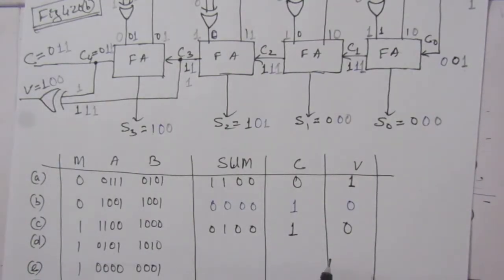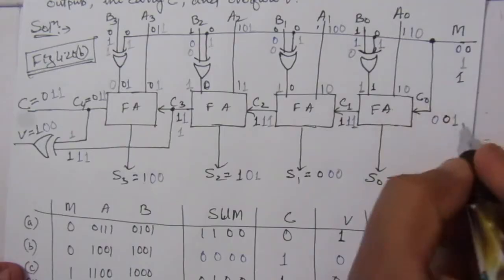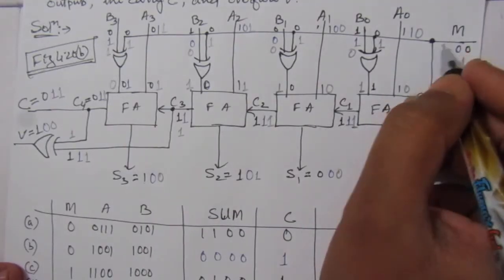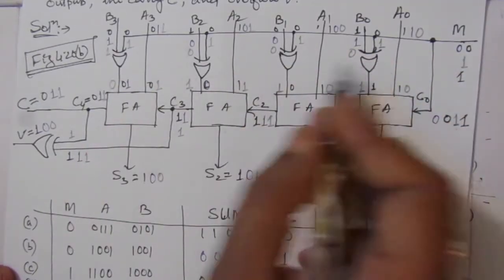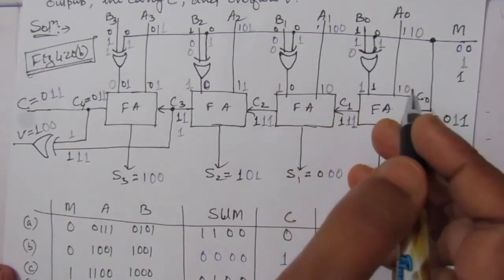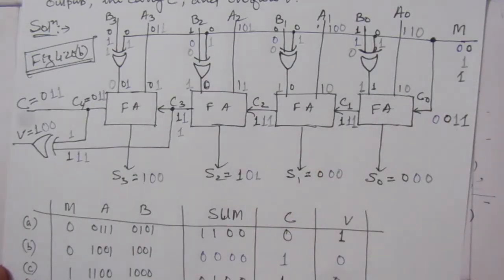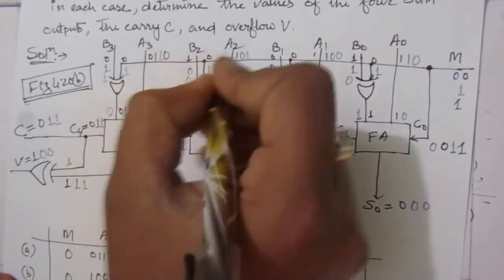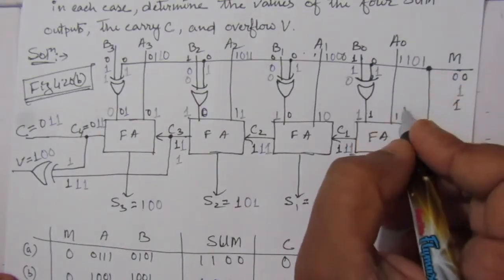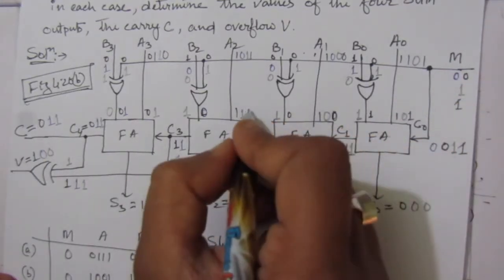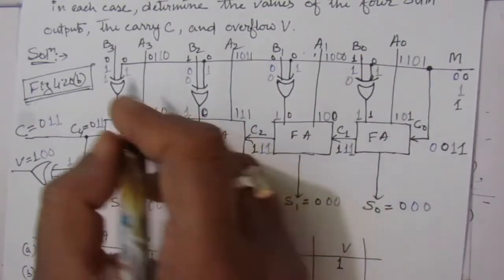For the fourth case, M is equal to 1, so 1 is applied to all XOR gates, inverting the B inputs. The A value is 0101 and the B value is 1010. With M=1, B is inverted. We place the inverted B values at the full adder inputs alongside the A values.